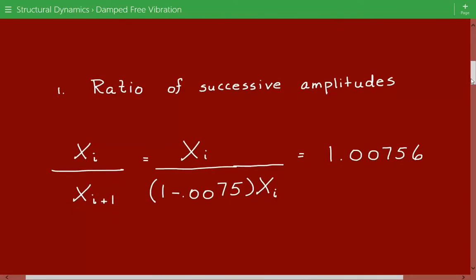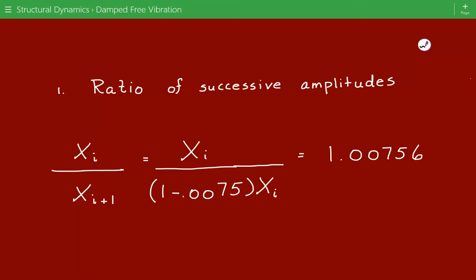So that's going to be equal to Xi divided by Xi plus 1. So that's equal to Xi and then divided by 1 minus 0.0075 because we have a 0.75% decay. So to capture this, we do 1 minus.